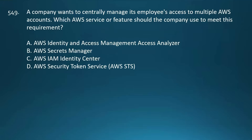Next question: A company wants to centrally manage its employees' access to multiple AWS accounts. Which AWS service or feature should the company use? Your options are AWS IAM Access Analyzer, AWS Secrets Manager, AWS IAM Identity Center, or AWS Security Token Service (STS). AWS IAM Identity Center is the recommended service for centralized access management across multiple AWS accounts. It allows the company to centrally manage user identities and permissions, enable single sign-on to AWS accounts and applications, and integrate with external identity providers like Microsoft Entra ID.